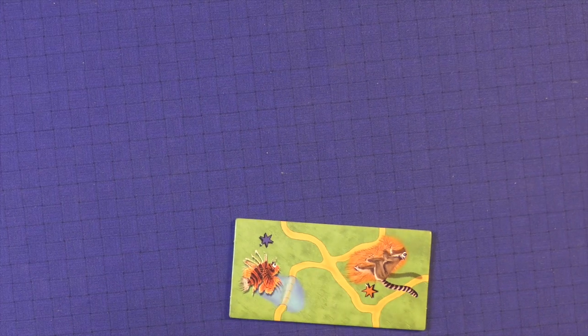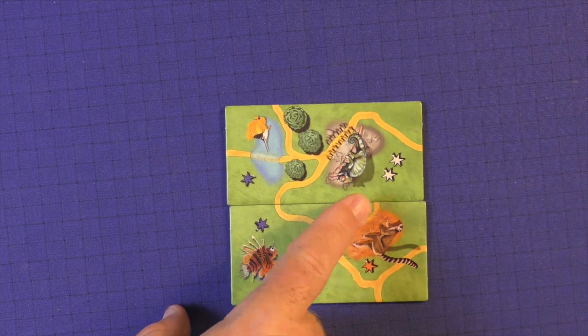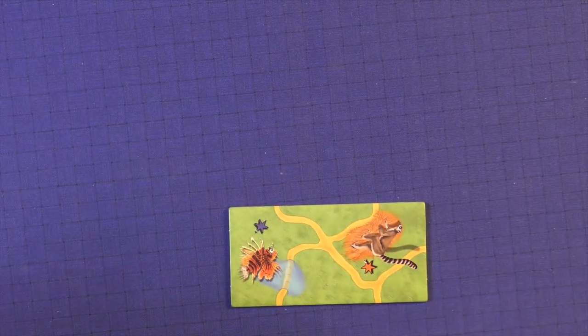It's very easy when you play a tile. All you got to do is at least extend one of the paths. Now, the paths can't go into the grass.